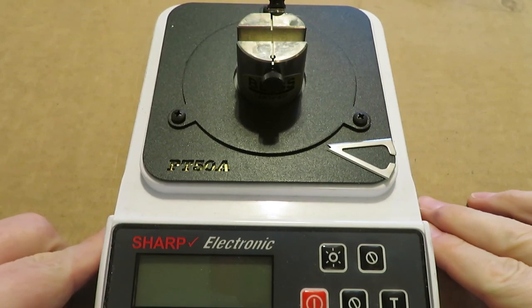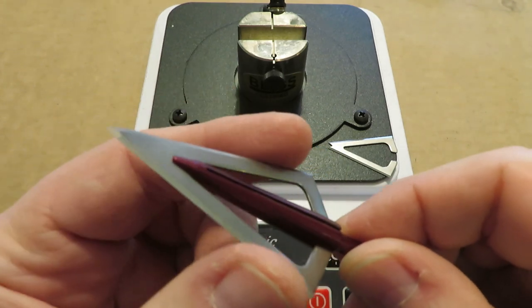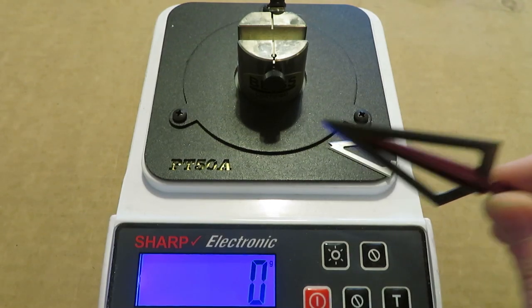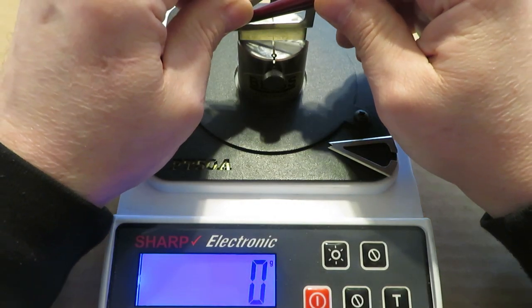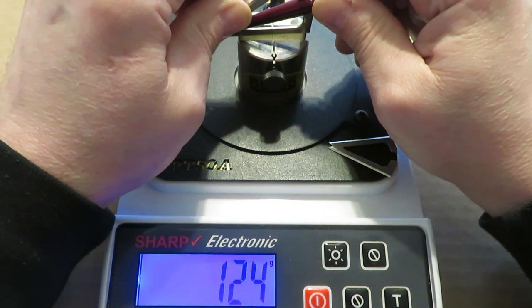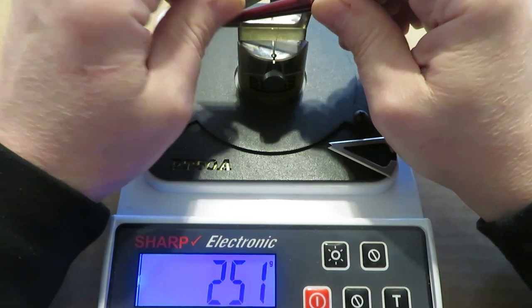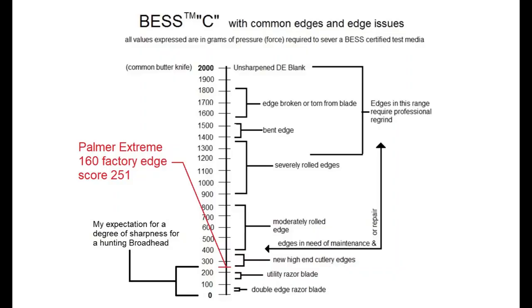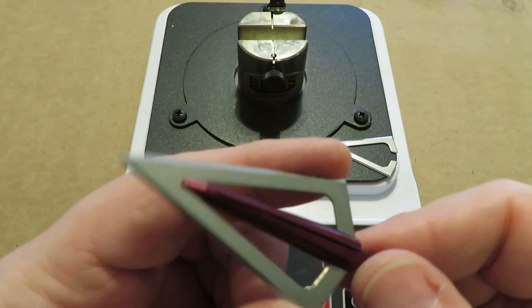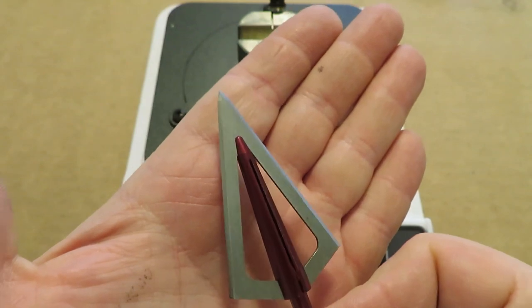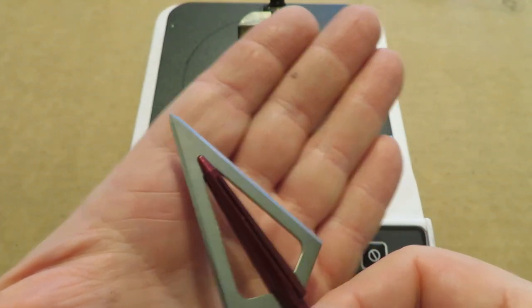Their edge looks good. I can tell just from feeling it that it's got some sharpness to it. Let's see what the scale says for a reading. 251. That is within my hunt readiness chart, so these heads are hunt ready.